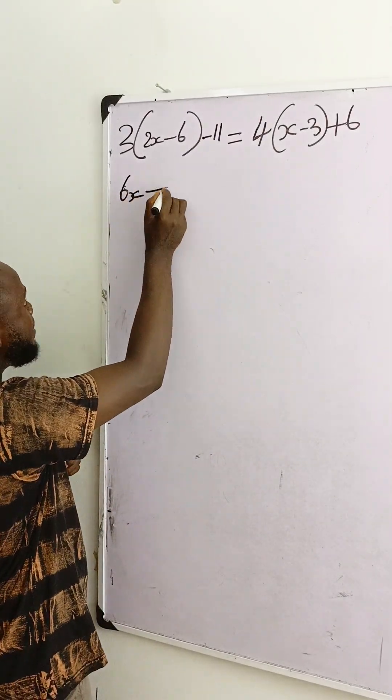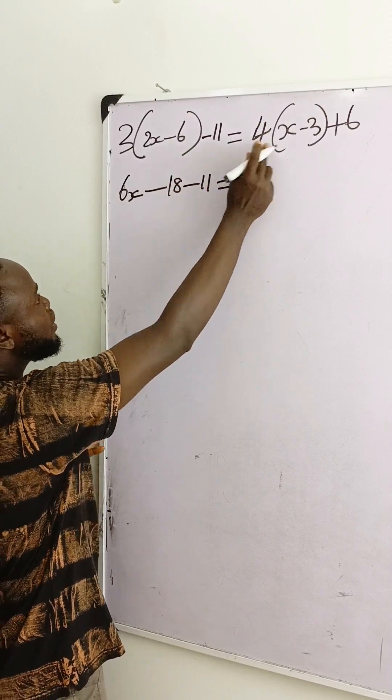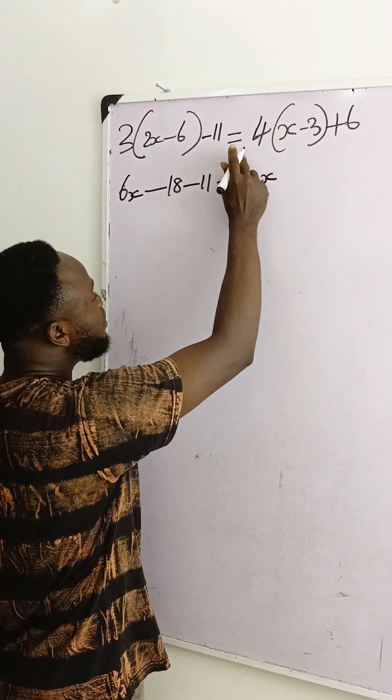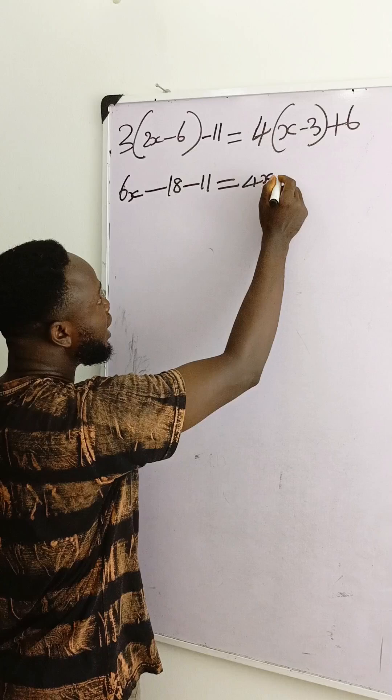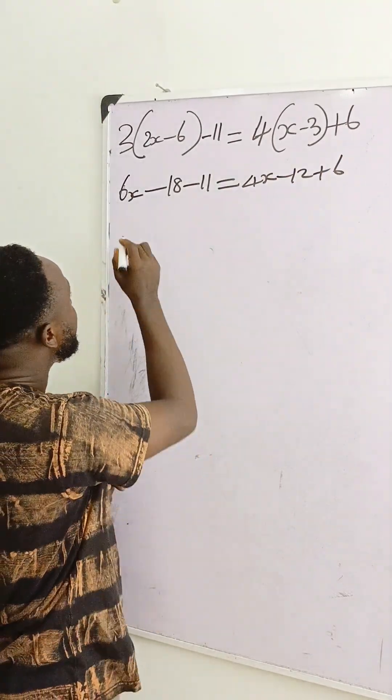6x minus 3 times 6 is 18, minus 11, equals 4 times x is 4x. 4 times minus 3 is minus 12 plus 6. You can see how simple this can be.